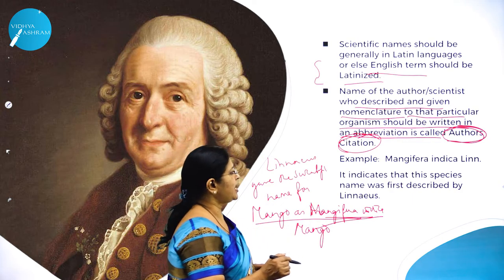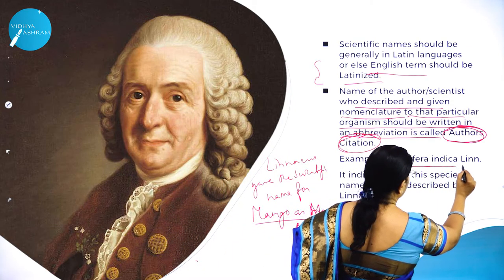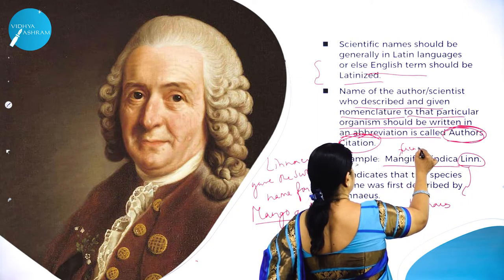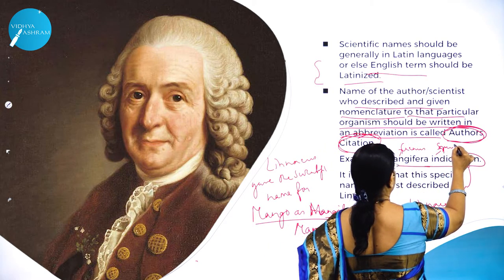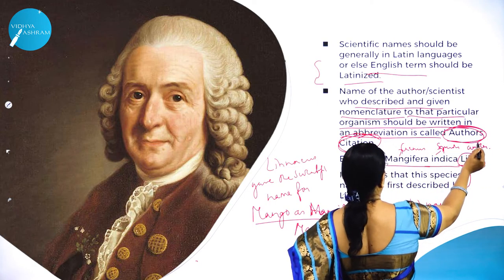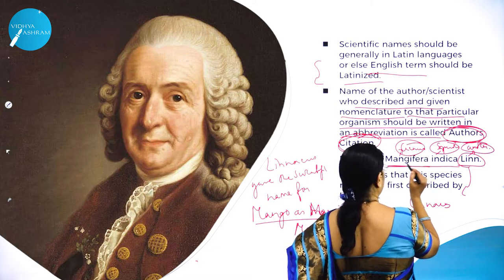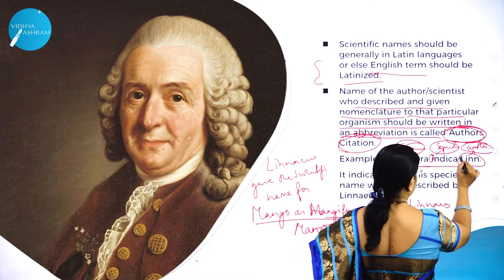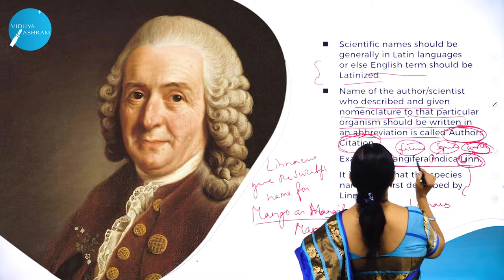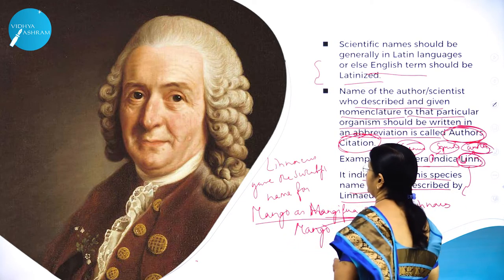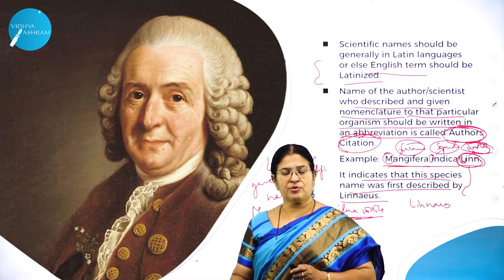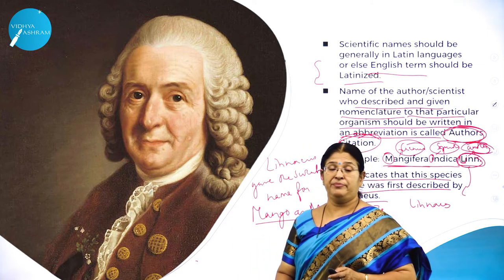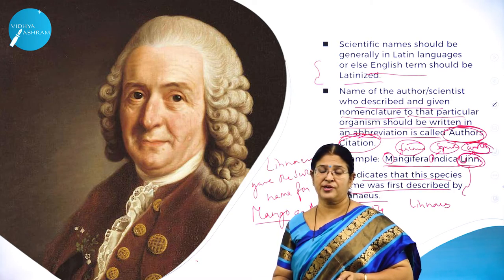For example, Mangifera indica Lin. — 'Lin' indicates Linnaeus, who gave this scientific name. 'Mangifera' indicates the genus name, 'indica' indicates the species, and 'Lin' refers to the author. This indicates that this species name was first described by Linnaeus. These are all the rules and regulations laid down to write scientific names — binomial nomenclature — which are very important from an examination point of view.